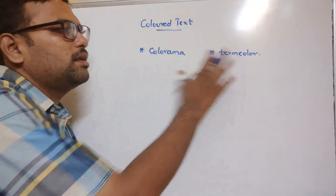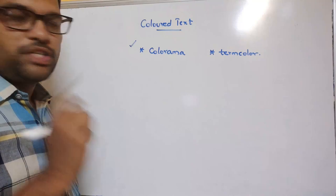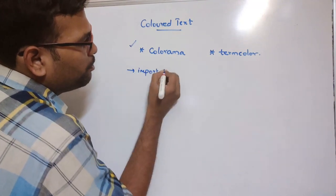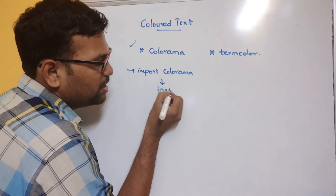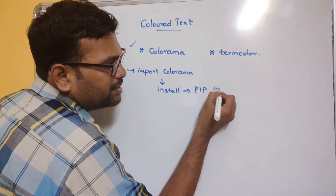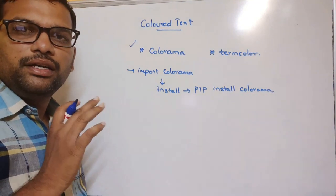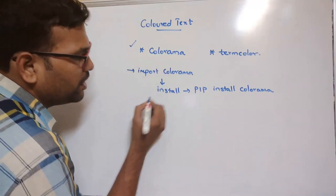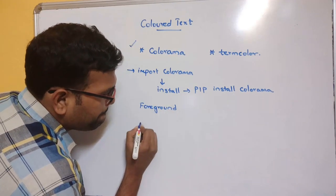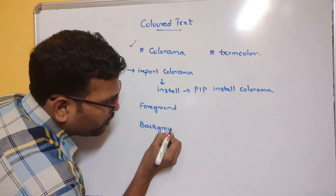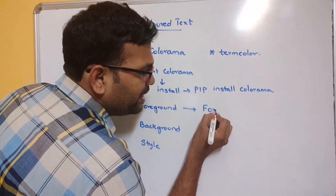We have to import colorama and termcolor — these are the two different ways to print text in different colors. First, let's see colorama. If this module is not available, install it using the pip command: 'pip install <module_name>'. Once installed, import colorama. It has three attributes: Fore (foreground), Back (background), and Style.